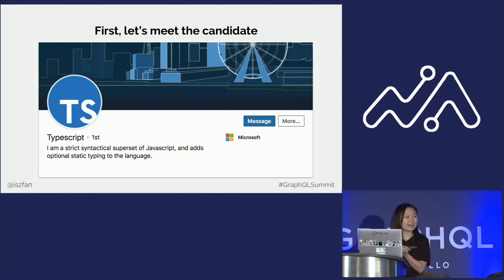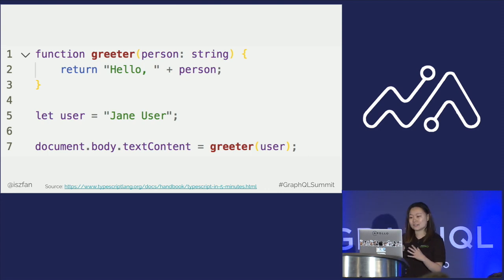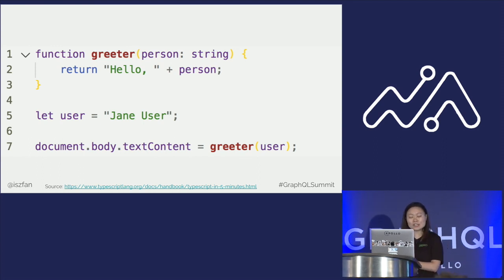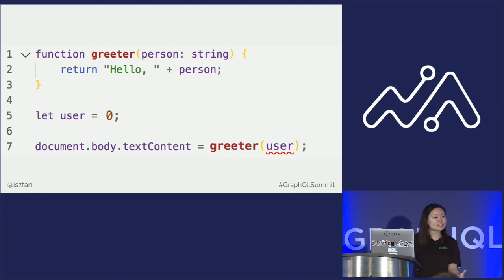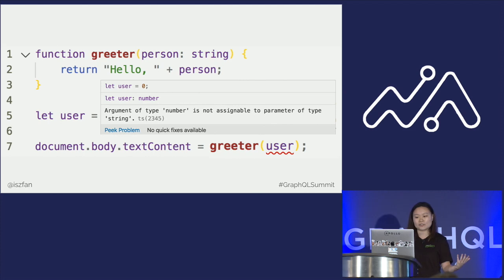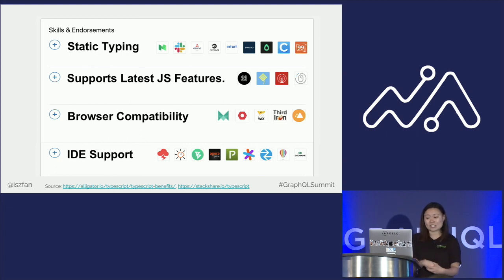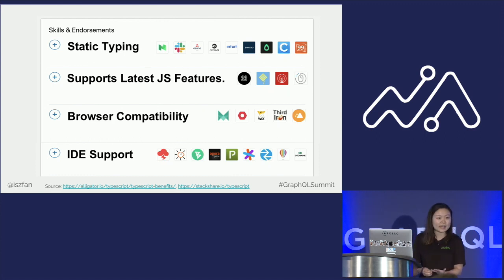TypeScript is a superset of JavaScript, and it provides static typing. As a quick example, there's a function called 'greeter' where the input 'person' is typed to be a string, so the only input accepted is a string value. If we change the string to a numeric value, TypeScript will catch that and throw an error. In Visual Studio Code, it will say the number is not compatible with parameter type string. TypeScript also supports the latest JS features, browser compatibility, and because it's developed by Microsoft, VS Code provides great tooling. In terms of adoption, over 2,000 companies are actively using TypeScript — it's very popular. But will it be a good fit for your team?